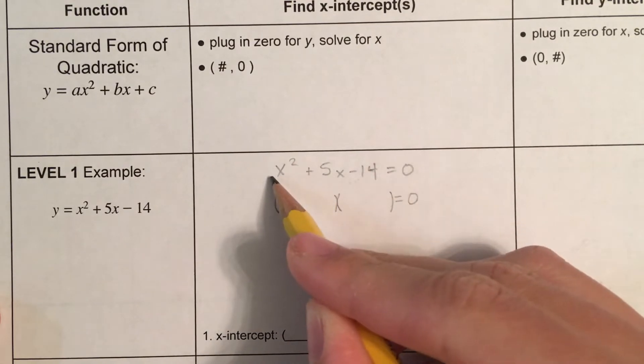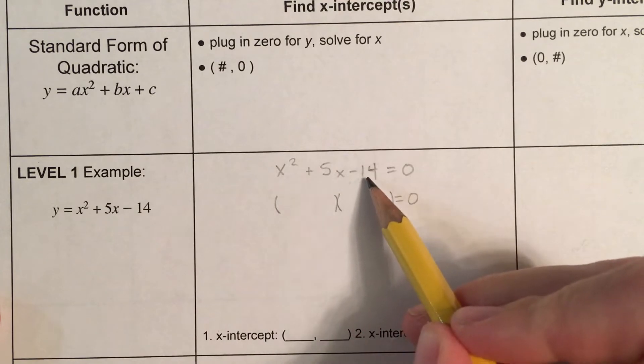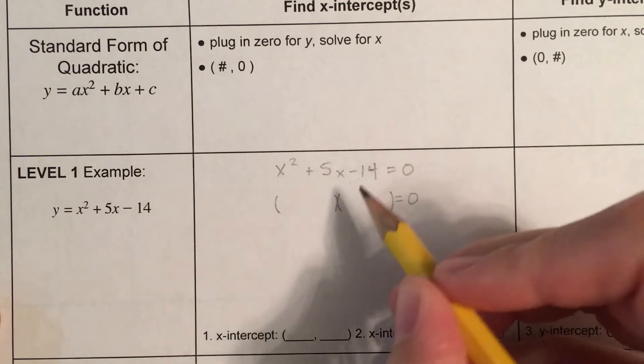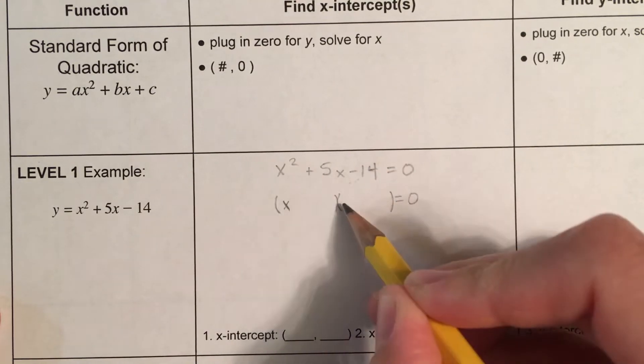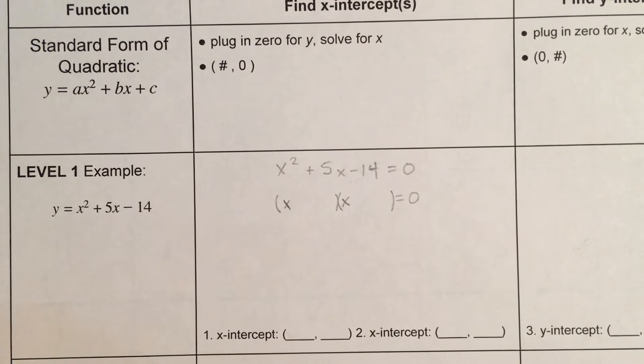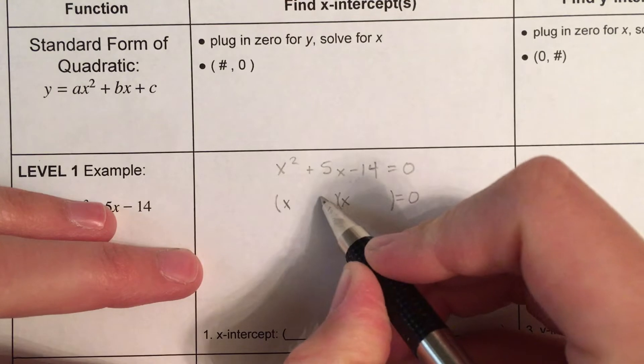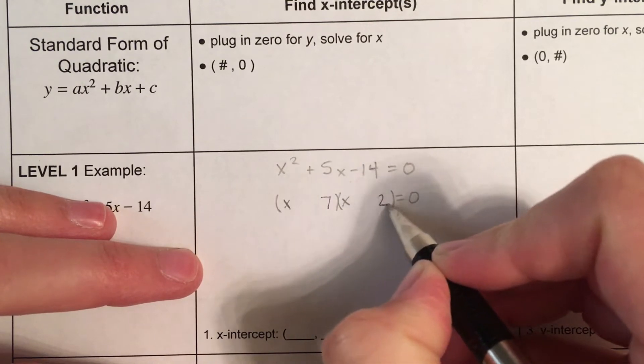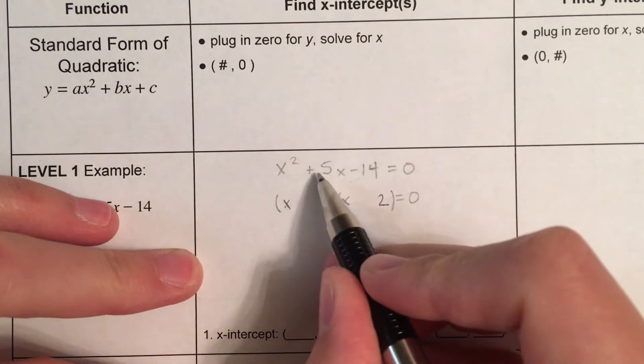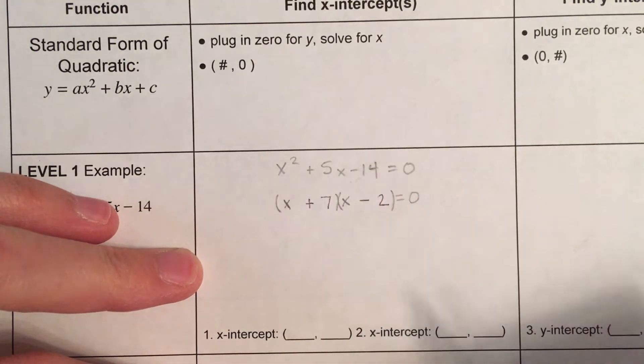And because this is a 1x squared, what I need is two numbers that multiply to negative 14 and add to 5. Two numbers that multiply to 14 are 7 and 2. And then in order to add to positive 5, this is going to be plus 7 and minus 2.